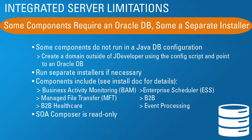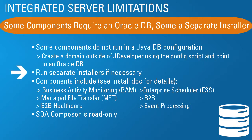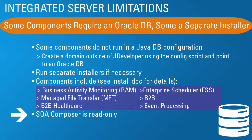So here are the limitations. The integrated server in this default configuration is using a Java DB and not an Oracle DB, and some components don't run in Java DB. In that case, you would create a domain outside of JDeveloper and point it to an Oracle database. There are also some separate installers not included in this package by default. The components that have issues with Java DB or have a separate installer are: business activity monitoring, enterprise scheduler, managed file transfer, B2B, B2B healthcare, and event processing. Some of these are SOA, not BPM, but you may encounter them in your BPM development.